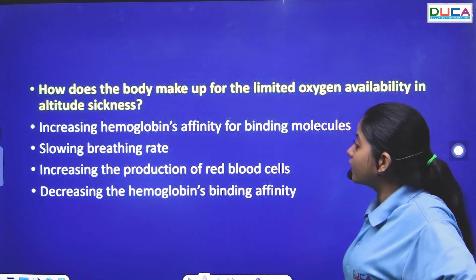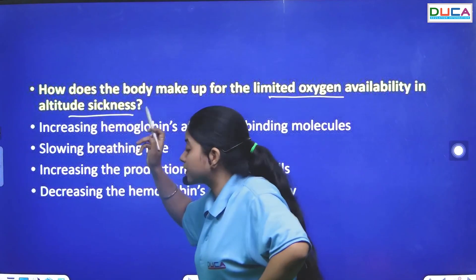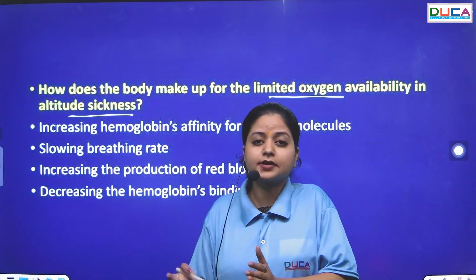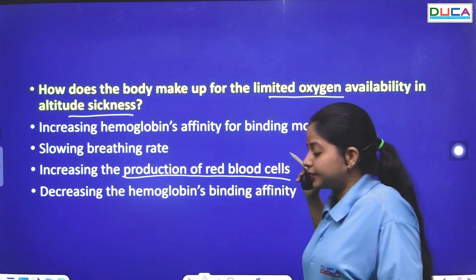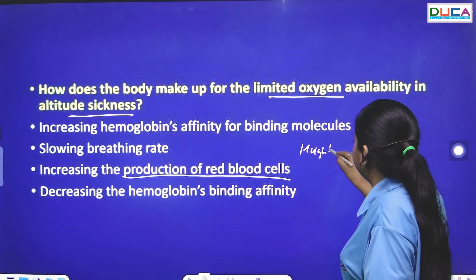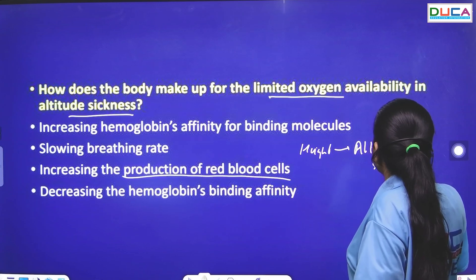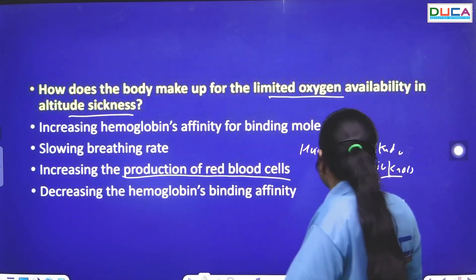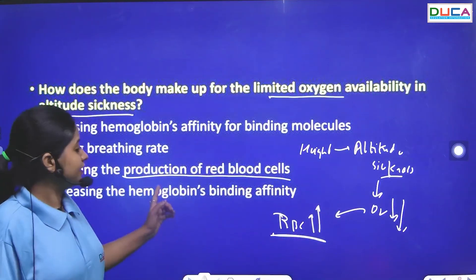The next question: How does the body make up for limited oxygen availability in altitude sickness? When we go to a high altitude, we suffer from altitude sickness because oxygen is reduced. To compensate for this, the body increases the production and number of RBCs (red blood cells).